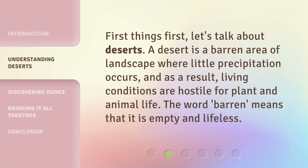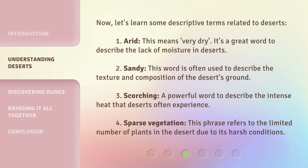First things first, let's talk about deserts. A desert is a barren area of landscape where little precipitation occurs, and as a result, living conditions are hostile for plant and animal life. The word 'barren' means that it is empty and lifeless. Now, let's learn some descriptive terms related to deserts.